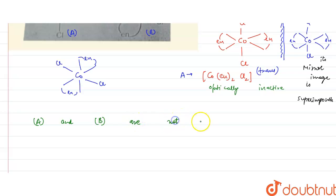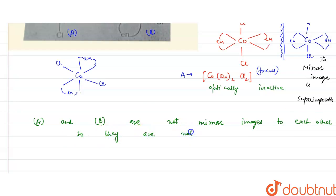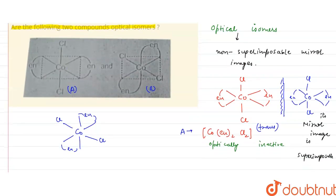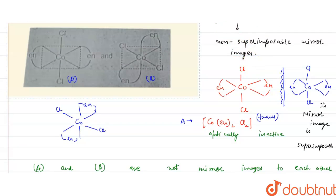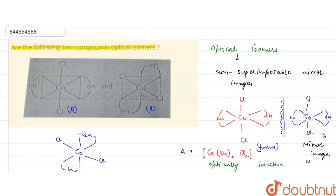So they are not the optical isomers. Optical isomers are those which are the non-superimposable mirror images of each other. Compound A's mirror image is superimposable, so it is optically inactive. Compound B is not even the mirror image of compound A, so it cannot be the optical isomer. This is the explanation — they are not the optical isomers of each other. I hope you understood it.